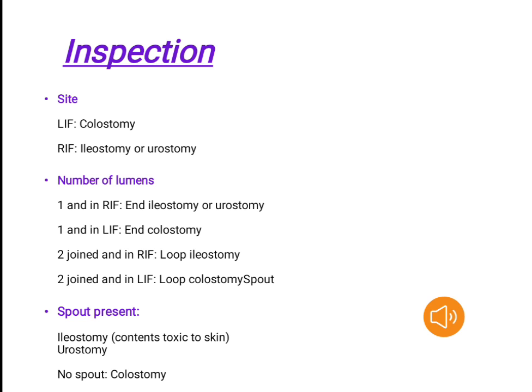Inspection — Sight. Left iliac fossa: colostomy. Right iliac fossa: ileostomy or urostomy. Number of lumens: one lumen in the right iliac fossa — end ileostomy or urostomy; one lumen in the left iliac fossa — end colostomy; two joined lumens in the right iliac fossa — loop ileostomy; two joined lumens in the left iliac fossa — loop colostomy.